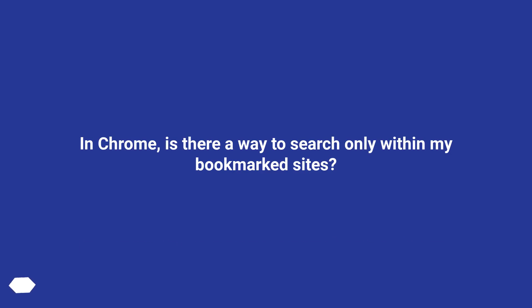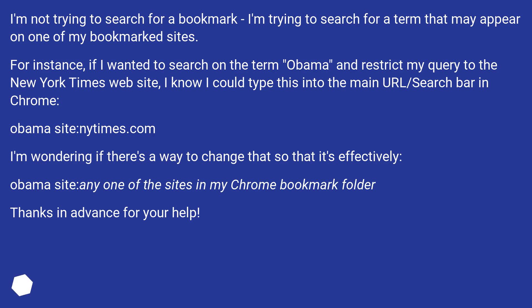In Chrome, is there a way to search only within my bookmark sites? I'm not trying to search for a bookmark — I'm trying to search for a term that may appear on one of my bookmarked sites.